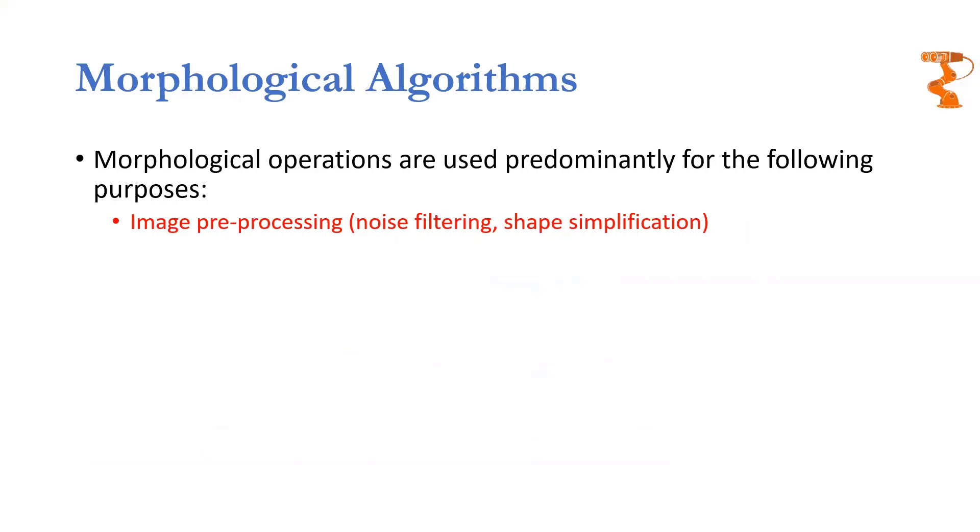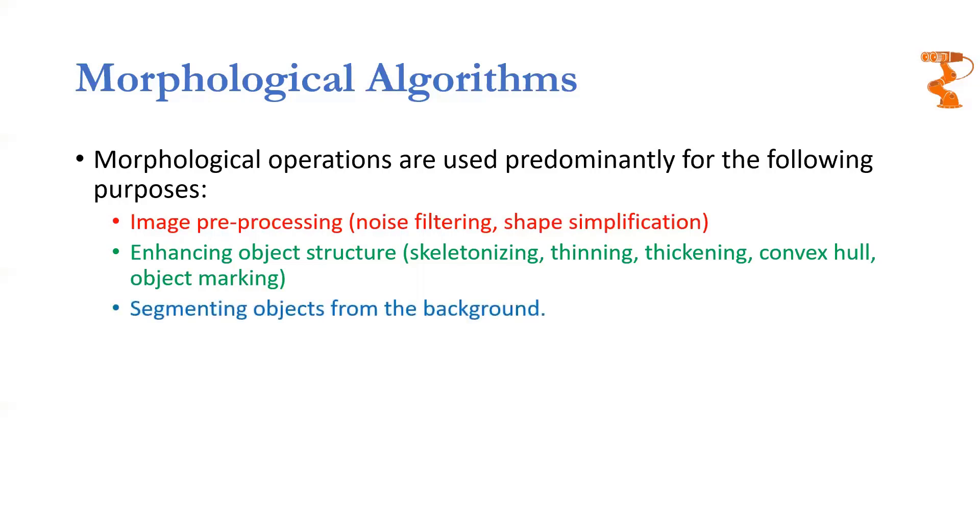We can use morphological algorithms, morphological operations for various kinds of things. For example, we can remove noise, we can simplify the shape so that we can figure out what is the shape of an object. We can do skeletonizing, thinning, thickening, convex hull finding, object marking, and there are various things which we hopefully will do in the practical section of this lecture.